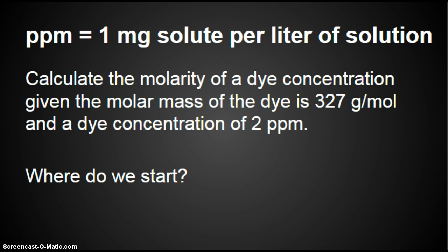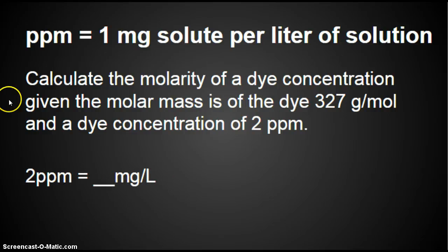Start with what you know. If parts per million is 1 milligram of solute per liter of solution, and we have 2 parts per million, we would then have 2 milligrams per liter.